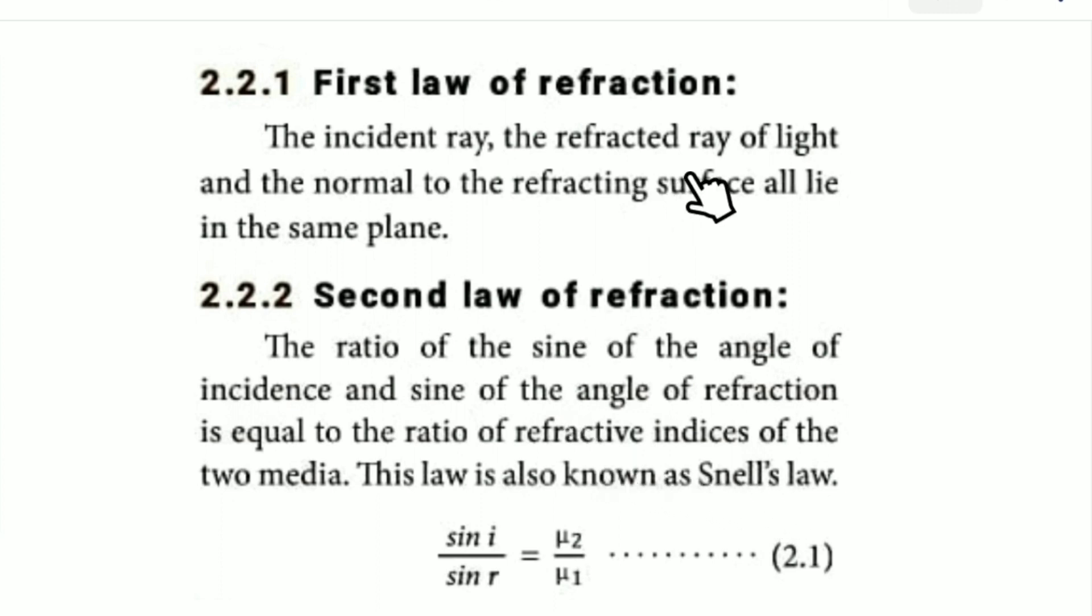First law of refraction: The incident ray, refracted ray, and normal all lie in the same plane. Second law of refraction: The sine of angle of incidence divided by the sine of angle of refraction equals the ratio of refractive indices of the two media.